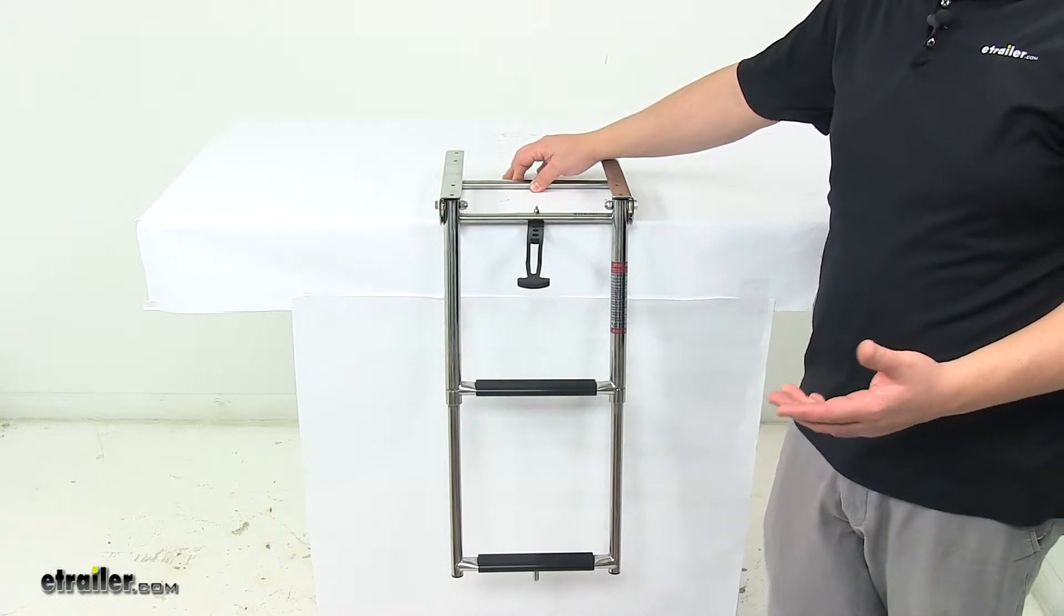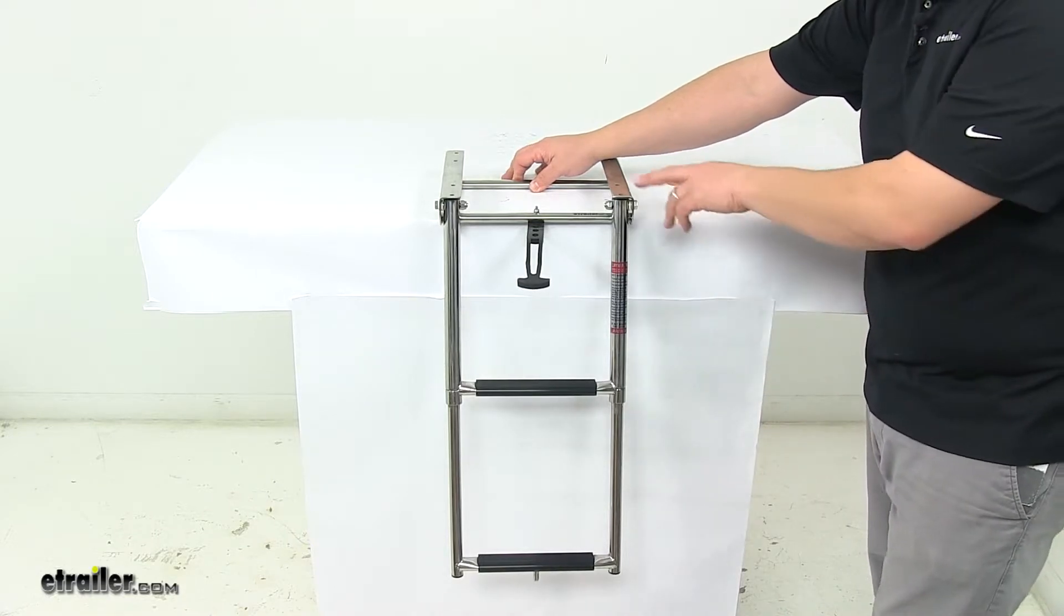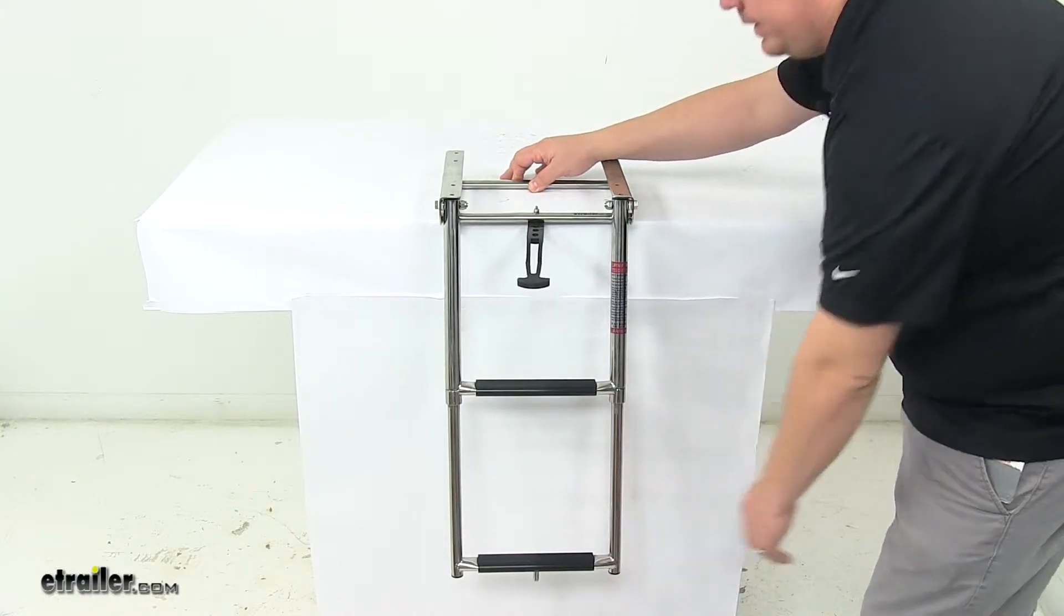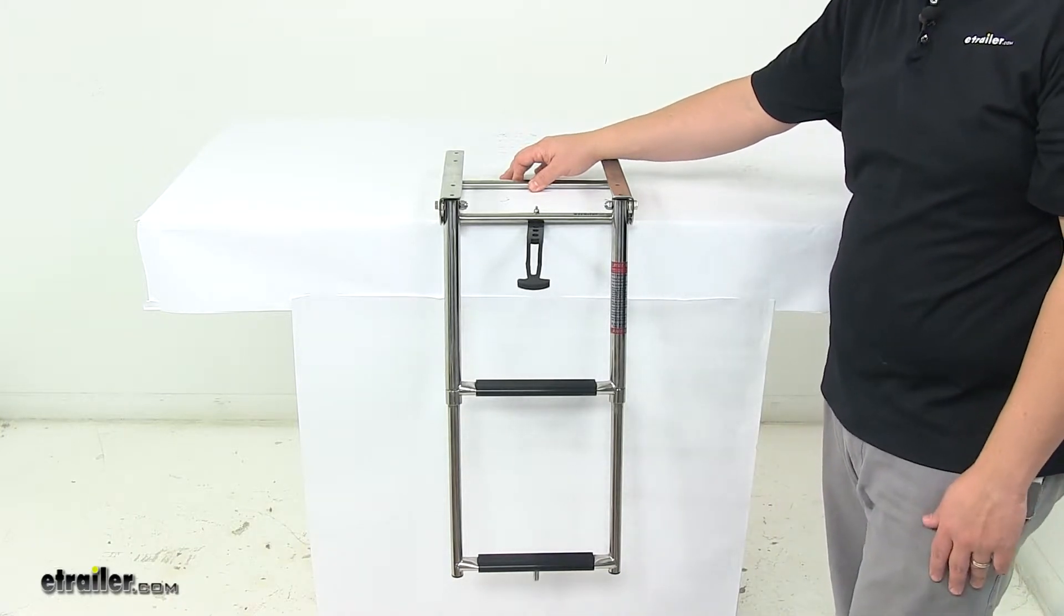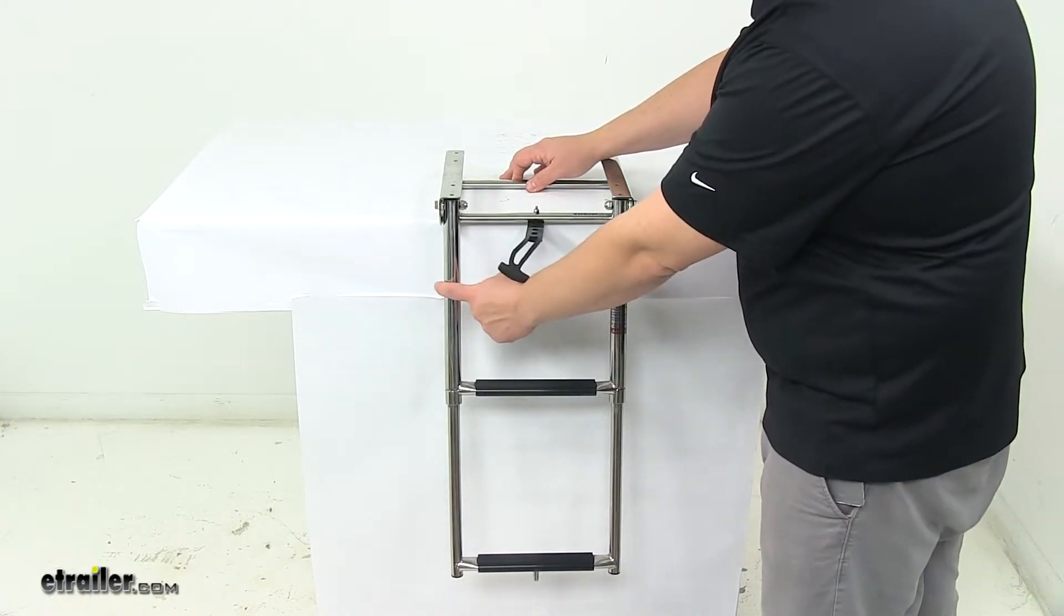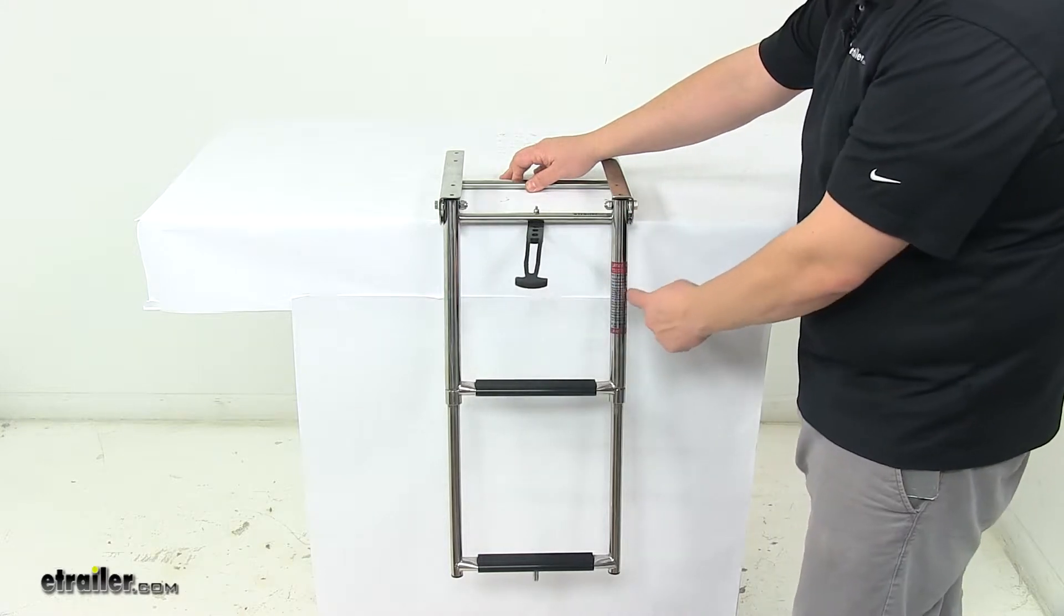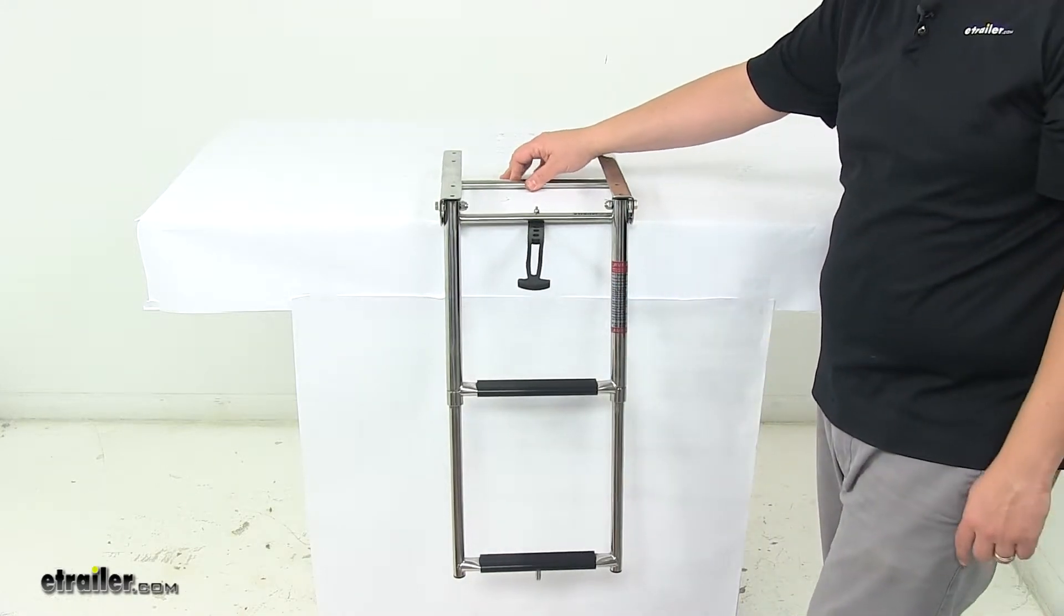A few measurements I want to go over with you real quick. From the top of the unit to the bottom when it's extended out like this is about 23 and a half inches long. From outside edge of this point here to the same point on the other side is about 11 inches wide.